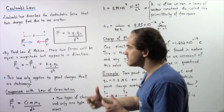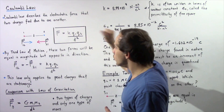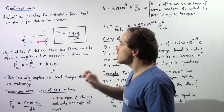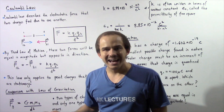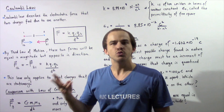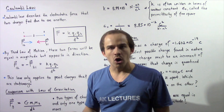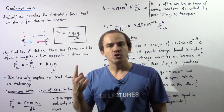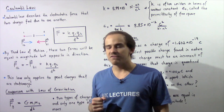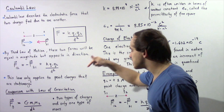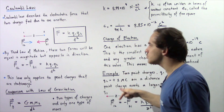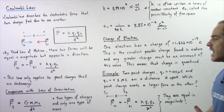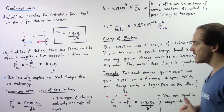Another distinction is that for Coulomb's law the charge could be positive or negative — there are two types of charges. While for gravitation there is only one type of mass. So two types of electric charges exist and only one type of mass exists.